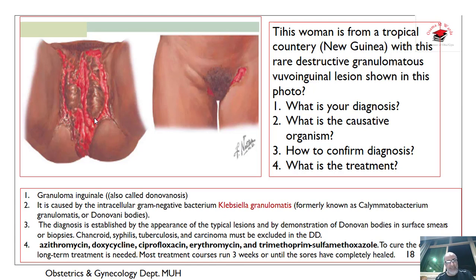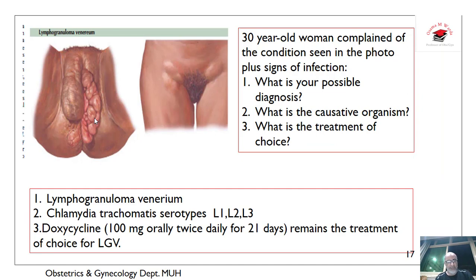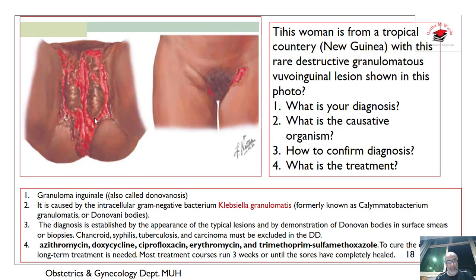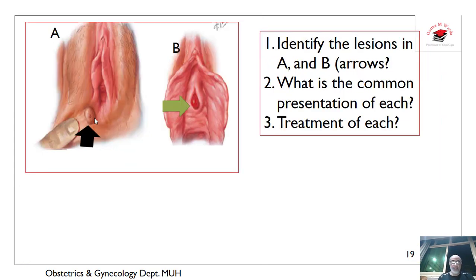Transverse cephalic tuberculosis and carcinoma must be excluded in the differential diagnosis due to its very severe figure as seen in the photo. Treatment may include azithromycin, doxycycline, ceftriaxone, ciprofloxacin, erythromycin, and trimethoprim-sulfamethoxazole. Long-term treatment is needed; most courses run for three weeks or until the sores are completely healed. This is granuloma inguinale with ulceration.